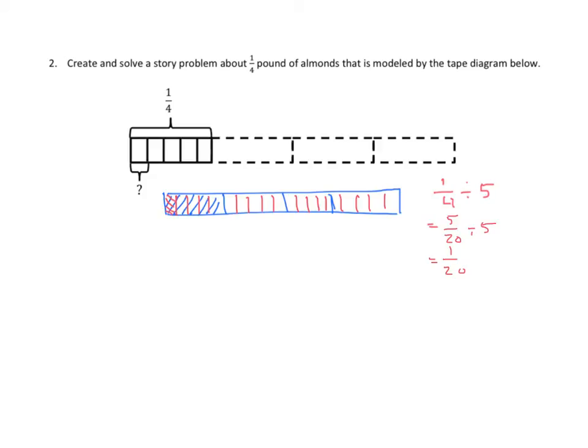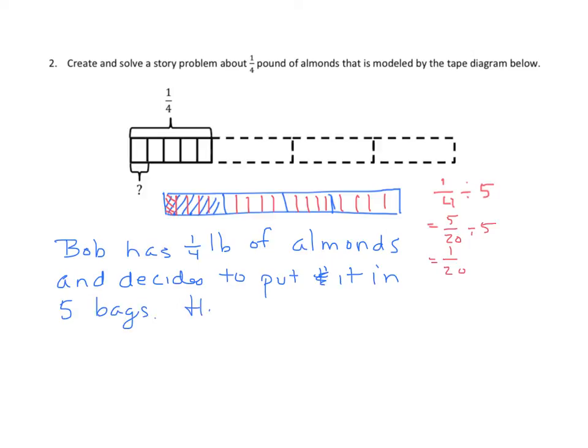Word problem. We could simply write something like, I like to use Bob. Bob has 1 fourth pound of almonds and decides to put it in 5 bags. How many pounds of almonds are in each bag? Again, very simple. Keep it simple.